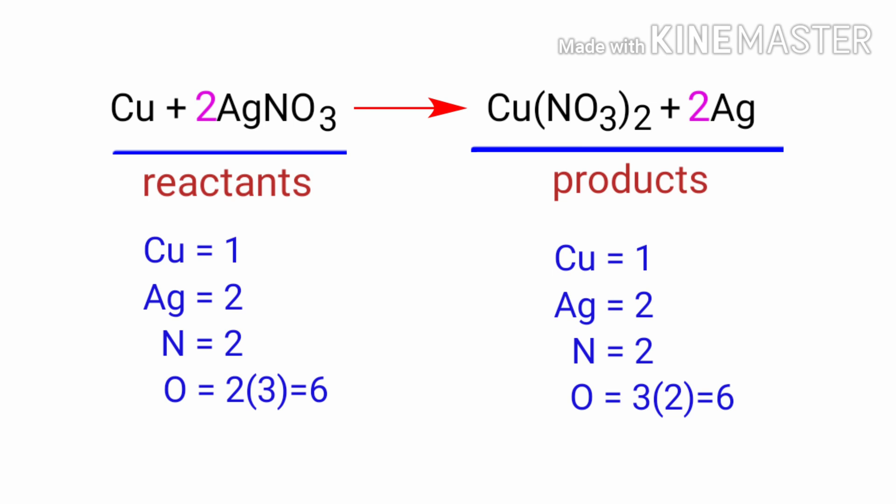The equation is now balanced. There are one copper atom, two silver atoms, two nitrogen atoms and six oxygen atoms on both sides.